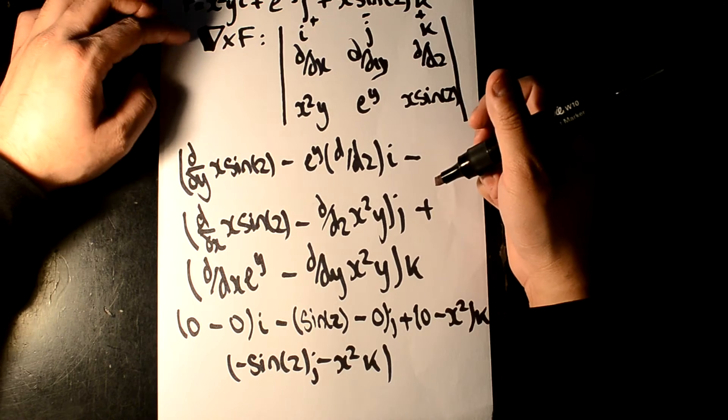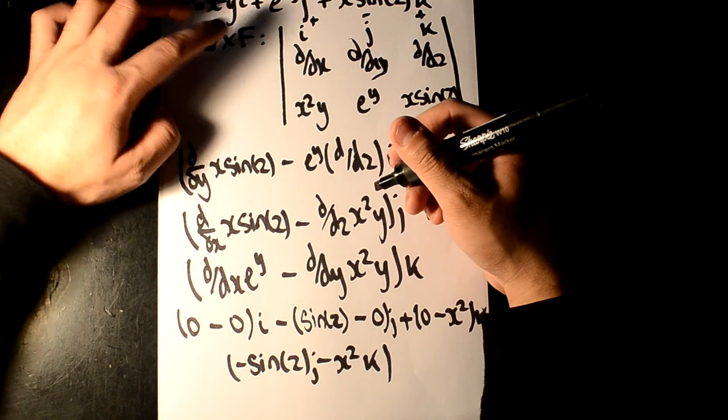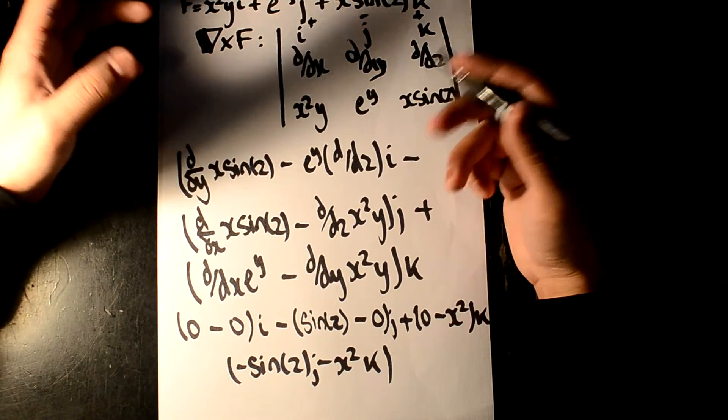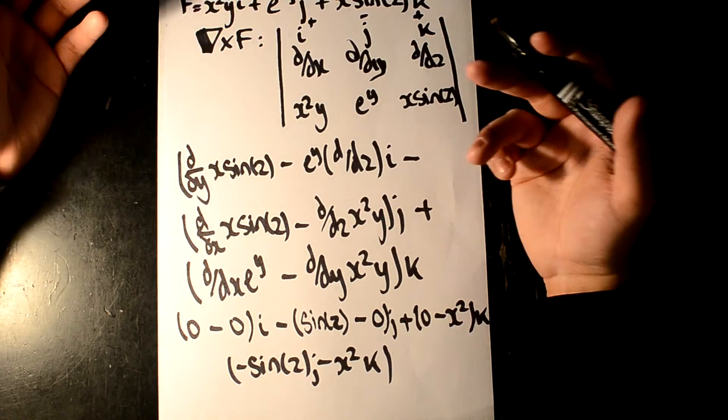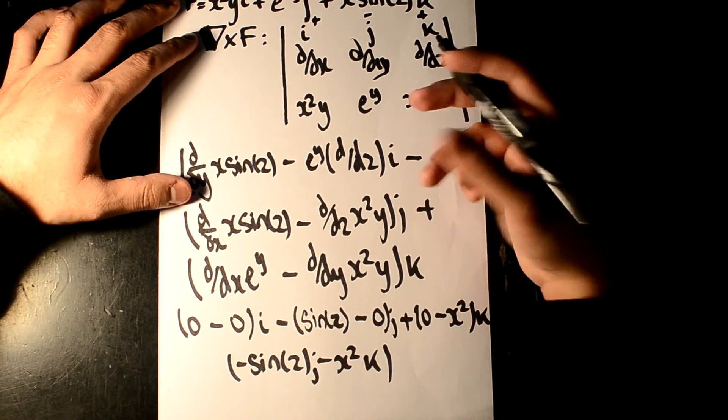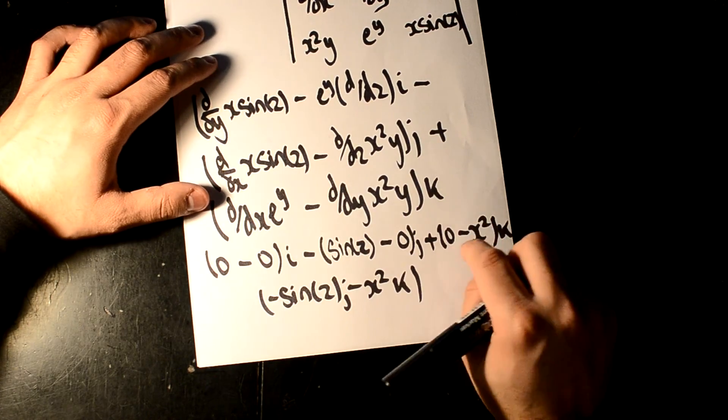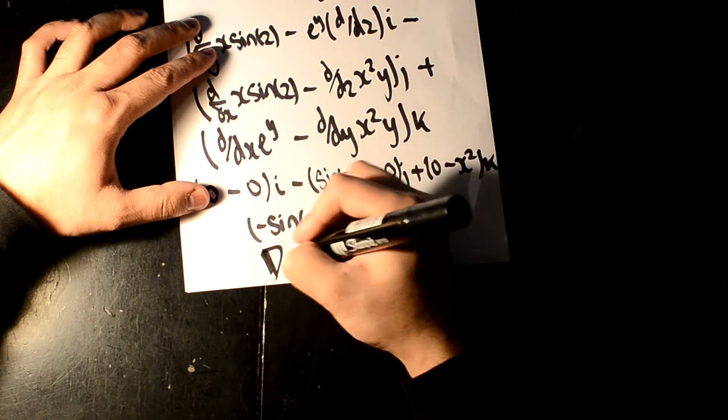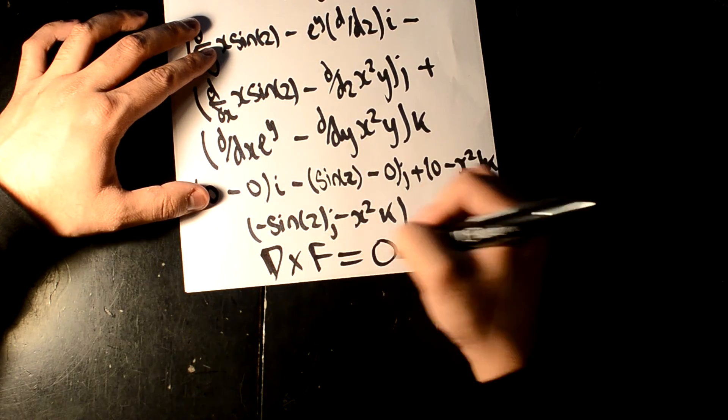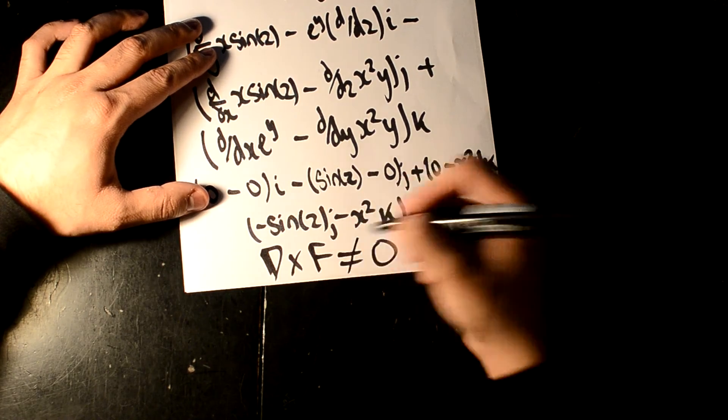Another point to add here is, sometimes it might ask you to say curl of cross f. Show that this vector, or this field, or this force is conservative. And by showing it's conservative, you should have zero, zero, zero. And therefore, the curl of f, so cross f, will equal zero. If it doesn't equal zero, then it is not conservative.